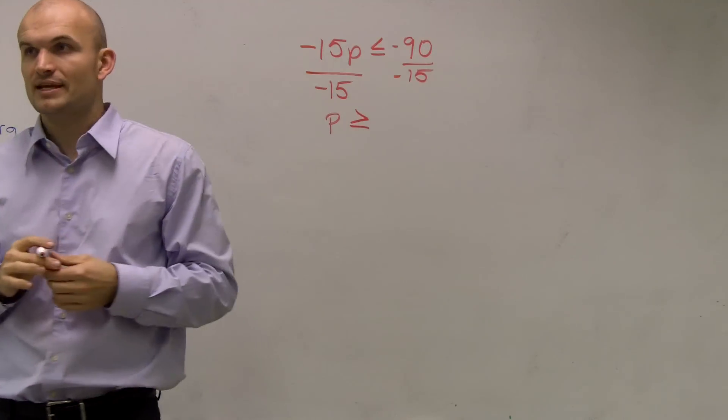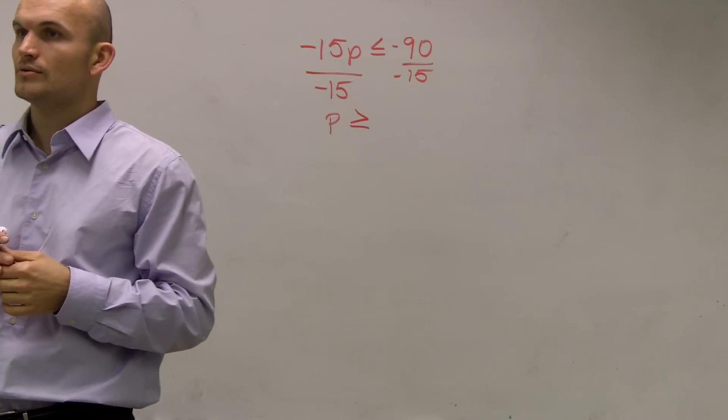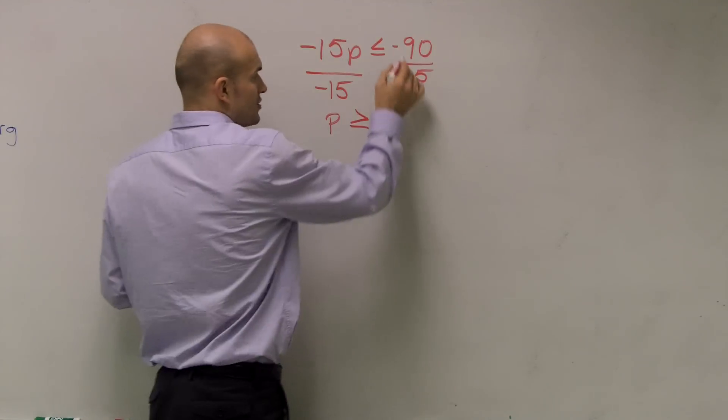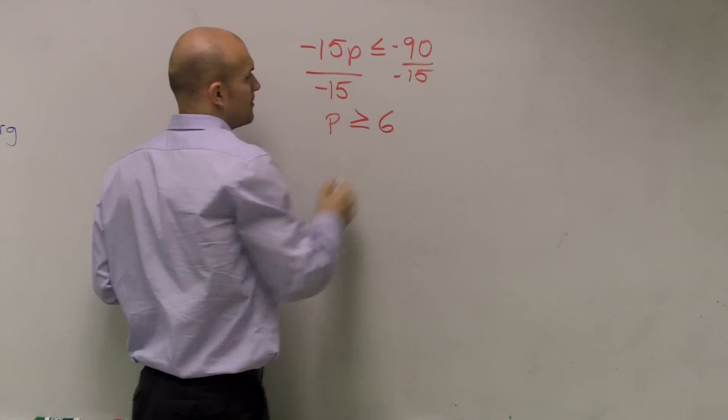Now, how many times does negative 15 go into 90? It's obviously 6. So a negative divided by a negative is a positive 6.